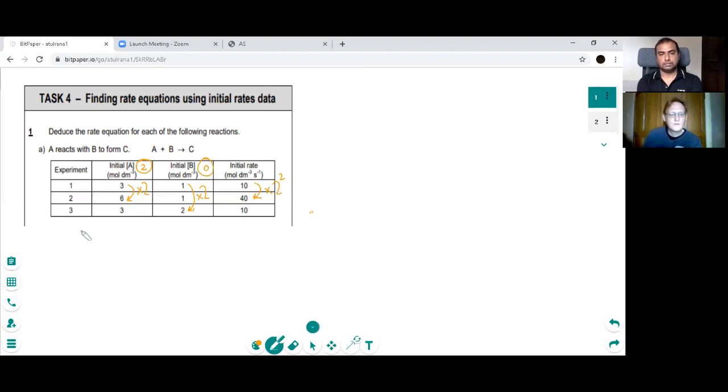So we know that the rate is proportional to the concentration of A squared. And then we can replace the proportion with equals the rate constant. So our rate equation would be rate equals the rate constant k times the concentration of A to the power 2. And that's our rate equation.